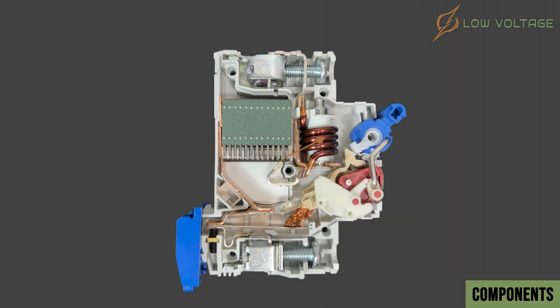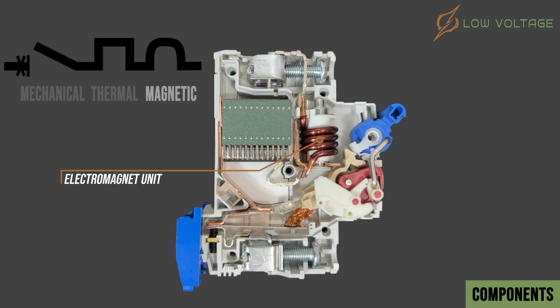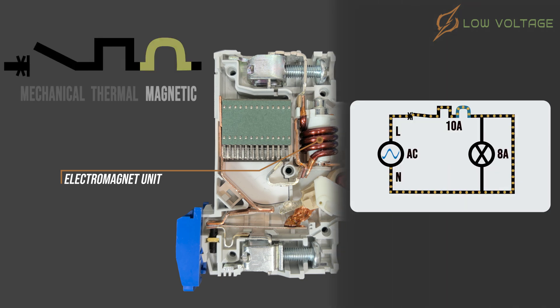An electromagnetic coil is responsible for the instantaneous high current faults, like short circuit. It is called the magnetic unit and described with this symbol. In Episode 1, we also saw its operation in a short circuit simulation.